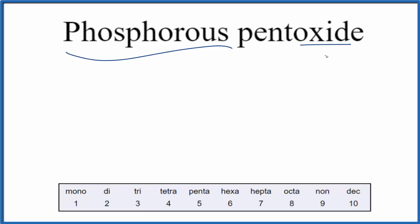So we have two nonmetals. This is going to be a molecular compound, and we'll use these prefixes here to help us understand the formula for phosphorous pentoxide.